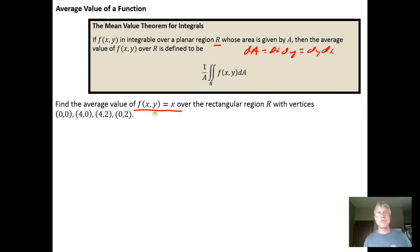If we're asked to calculate the average value of a function over a particular region, here we're going to get the average value of the function over a rectangular region. My first step would be to draw the region I was going to integrate over. We have a rectangular region with vertices at the origin (0,0), at the point (4,0), at the point (4,2).